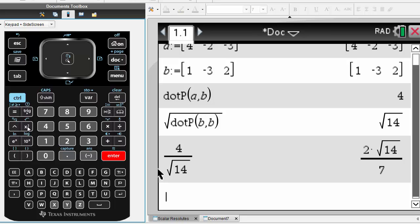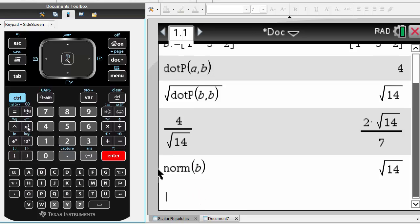Now, if you want another way of working out the magnitude of vector B, we can just type in norm and that will produce the same result. In either case, the scalar resolute of vector A on B for our example is 2 root 14 on 7.